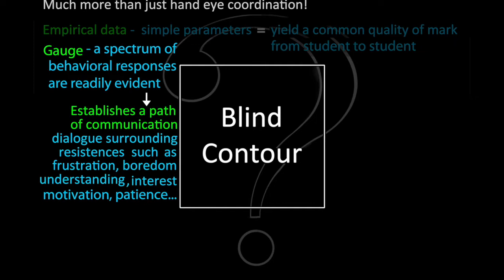That observation, that moment where a student is doing one contour drawing in my presence, establishes a path of communication. It creates a dialogue surrounding resistances such as frustration, boredom, comprehension, interest, motivation, and patience.